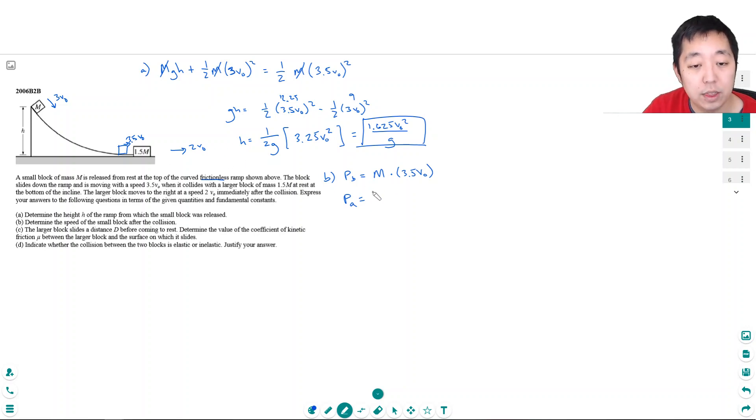So after it collides, this thing has some momentum. We'll call Vm, the momentum of this block. The other block has 1.5M times its velocity, which was 2V0, right? And my goal is to say, well, these two momentums are the same. So I would have 3.5MV0 equals MVm plus 3MV0, 1.5 times 2. I bring this over here. These are all the same M. So I can actually cancel the M's. So I would get 0.5V0 by subtracting the 3V0 over here is equal to Vm. So the block moves to the right with 0.5V0.